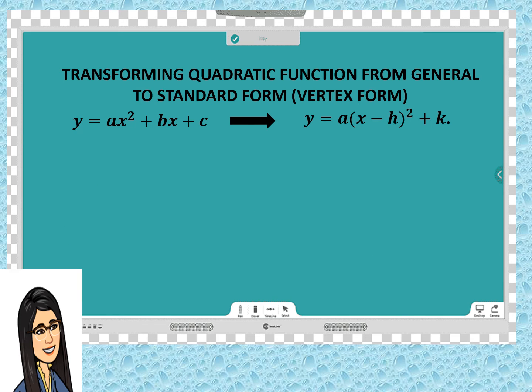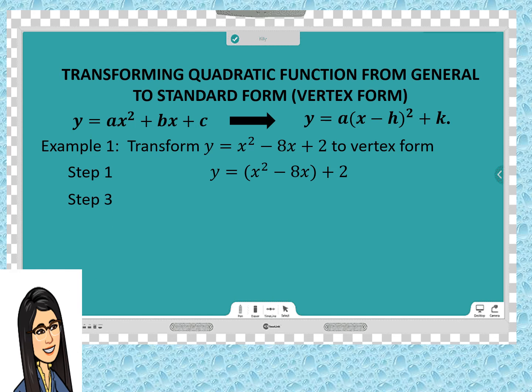Now, let us apply these steps in the following examples. Transform y = x² - 8x + 2 to vertex form. Applying step 1, we will enclose terms with x. So, y = (x² - 8x) + 2. Since the coefficient of x² is 1, we're going to skip step 2. Now, let us proceed to step 3.